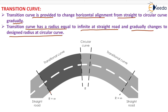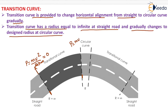We generally provide a transition curve in between the straight alignment of a road and circular curve just to introduce the centrifugal force gradually. At the junction of the transition curve and straight alignment, the radius is infinite, so the value of centrifugal force is mv²/r. If radius is infinite, centrifugal force equals 0, and slowly the radius changes from infinite to R, so the centrifugal force increases from 0 to mv²/r.